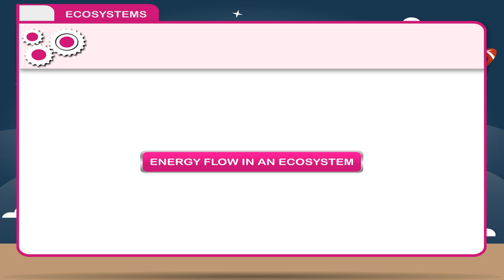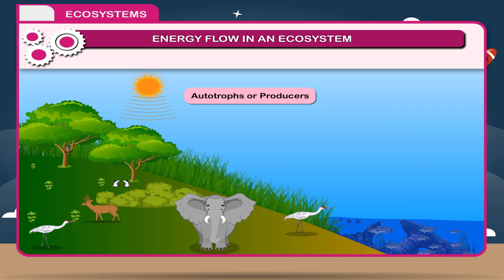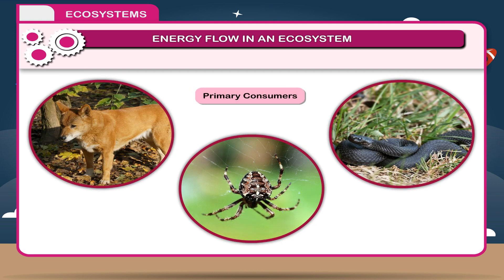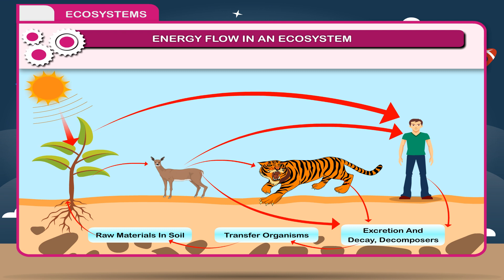Energy flow in an ecosystem. All living organisms require energy for their vital functions. The sun is the ultimate source of energy. Energy enters the ecosystem through plants. Green plants produce their own food so they are called autotrophs or producers. Small animals that consume plants are called primary consumers. Animals that feed on primary consumers are called secondary consumers. Large animals that feed on secondary consumers are called tertiary consumers. All waste produced by living organisms and dead and decaying animals and plants are consumed by microorganisms called decomposers.